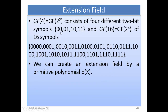GF4, which equals GF(2^2), consists of 4 different 2-bit symbols: 00, 01, 10, and 11. GF16, which equals GF(2^4), has 16 symbols from 0000 to 1111.